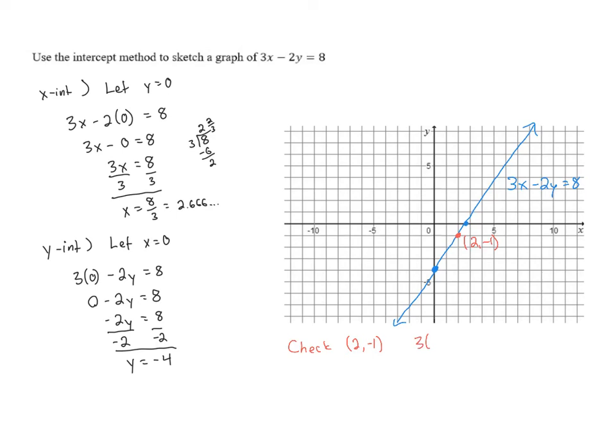We have 3 times x, which is 2, minus 2 times y, negative 1. And we want that to equal 8. 3 times 2 is 6. A negative times a negative is a positive, so this will be plus. 2 times 1 is 2, so we have 6 plus 2 equals 8.